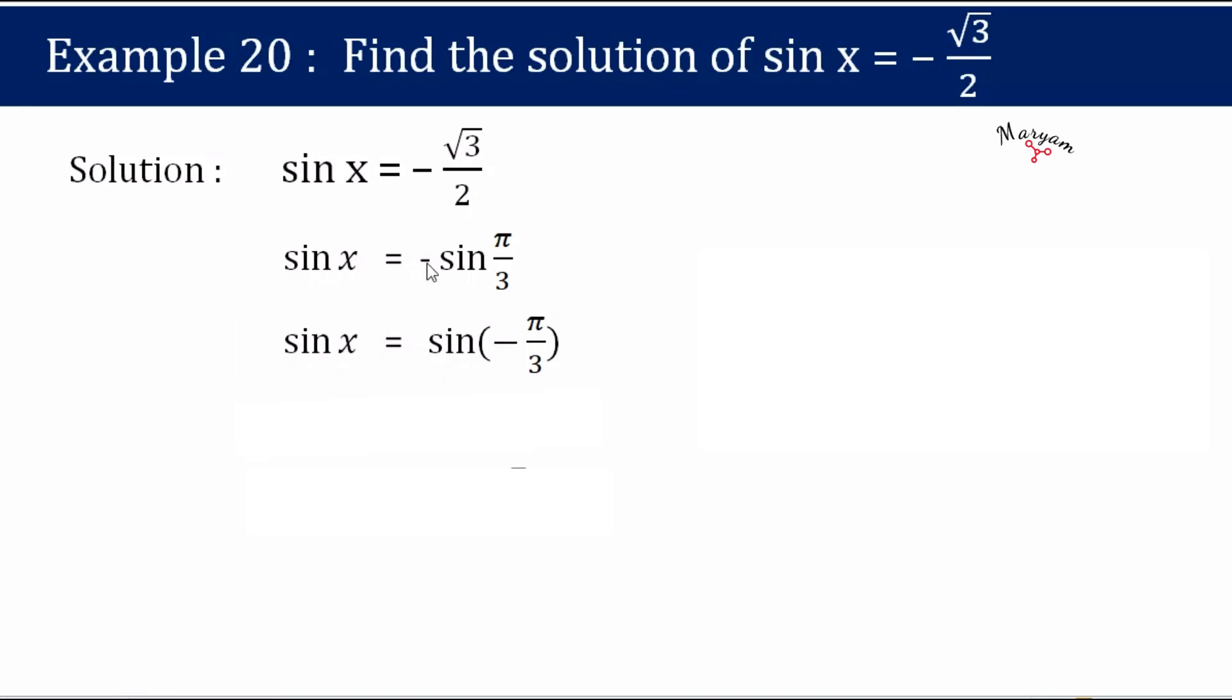So sin x equals, this minus will shift here in the theta. So it will be sin minus pi by 3, because we have minus root 3 by 2 here. The value of minus root 3 by 2 will be sin minus pi by 3.